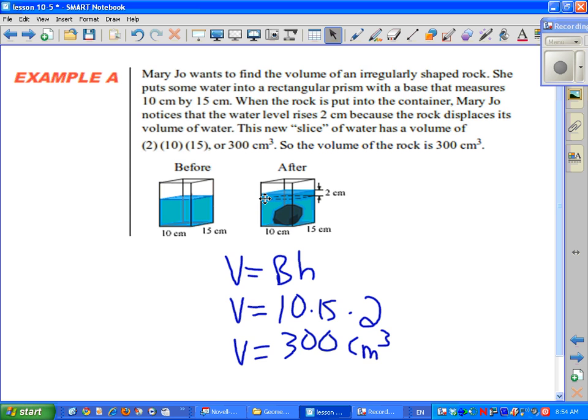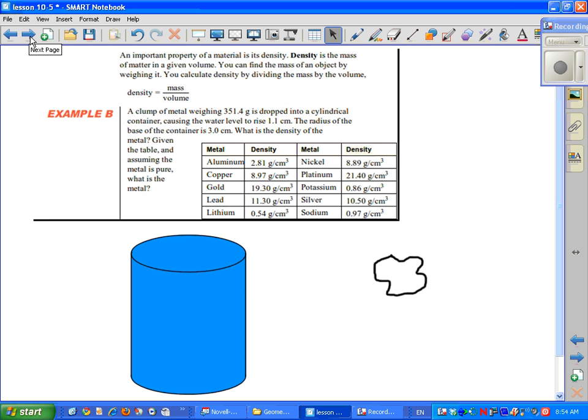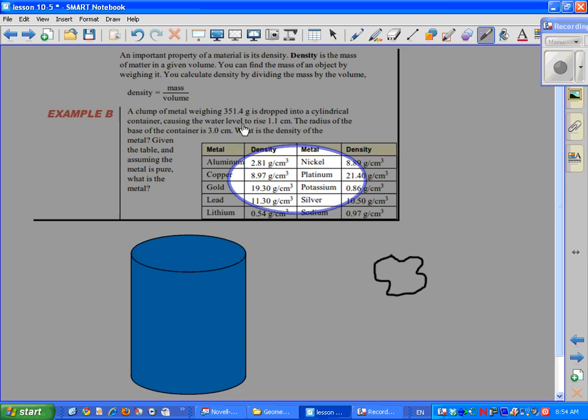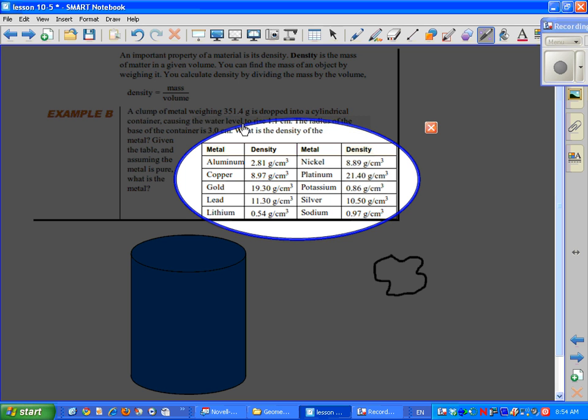Now the second topic is kind of related to this and it has to do with something called density. So if you take a look first of all at this table right here you will see a bunch of precious metals: aluminum, copper, gold, lead, platinum, potassium, silver, sodium, nickel, and lithium. And as it turns out, scientists have discovered that each of these metals has a specific density that only that metal has. So if you can figure out the density of an object, you can figure out what metal you have.